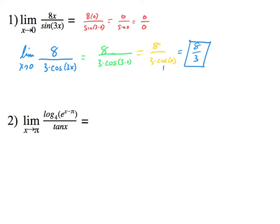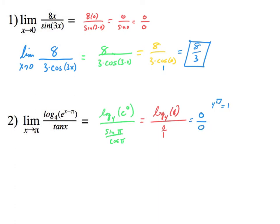Let's do this next one. Let's see if L'Hôpital's works. What we're going to do is plug in π top and bottom and see what we get. So if we plug in π, we will get log base 4 of e to the 0 — because π minus π is 0 — over tangent π. I'm going to write that as sine π over cosine π, because that makes it a little bit easier to see. Now e to the 0 is 1, so this is log base 4 of 1, and sine π over cosine π is 0 over 1. And log base 4 of 1 — that's saying 4 to the what power is 1 — isn't that 0? So this is going to be 0 over 0, which is another indeterminate form.